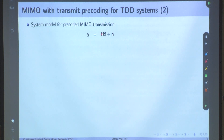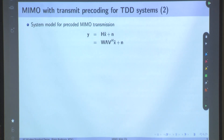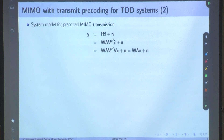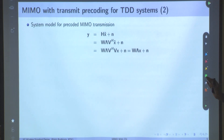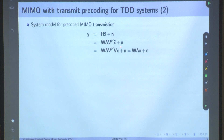Now, once we have this system model, it is easy to analyze what happens. This is our precoded MIMO transmission. We know H can be written as W·lambda·V Hermitian. And what is x̃? x̃ is V·x. So y = W·lambda·V^H·V·x + n. Since V Hermitian times V gives identity because V has orthogonal columns, we are left with y = W·lambda·x + n.